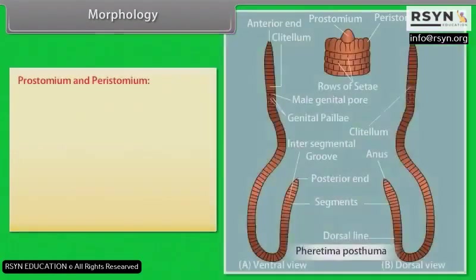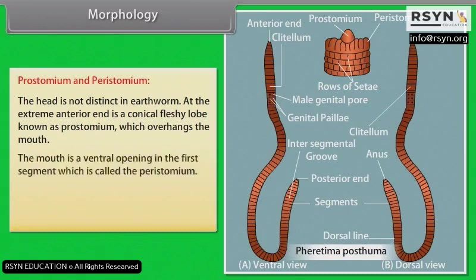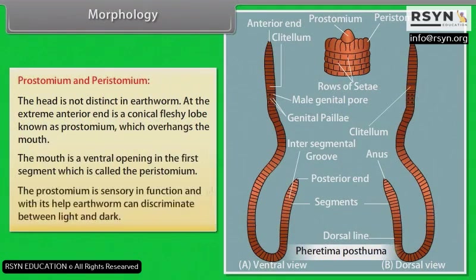Prostomium and Peristomium: The head is not distinct in earthworm. At the extreme anterior end is a conical fleshy lobe known as prostomium, which overhangs the mouth. The mouth is a ventral opening in the first segment, called the peristomium. The prostomium is sensory in function, and with its help the earthworm can discriminate between light and dark.